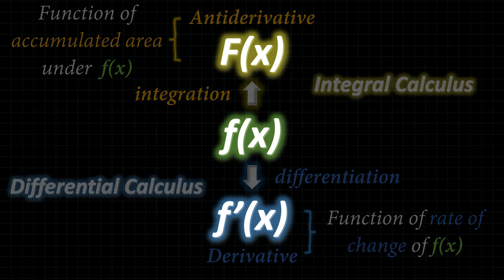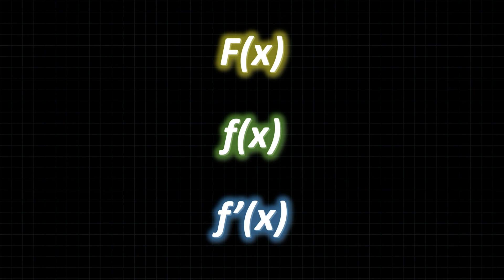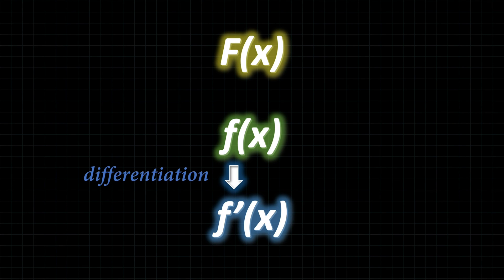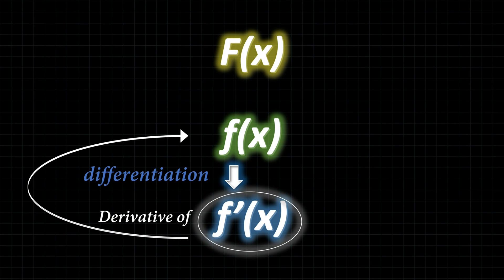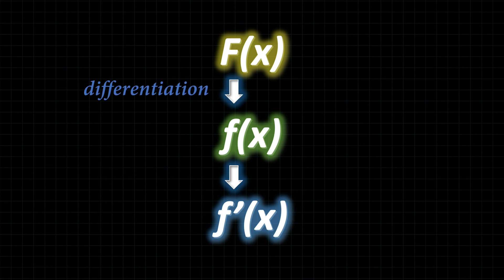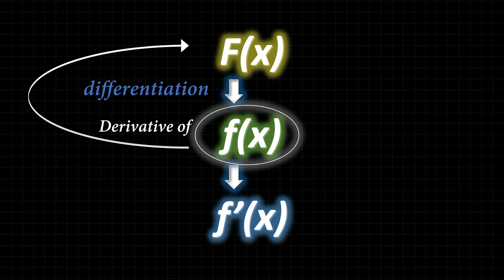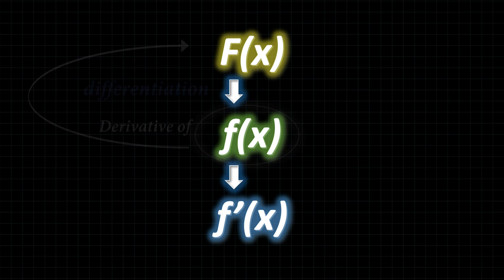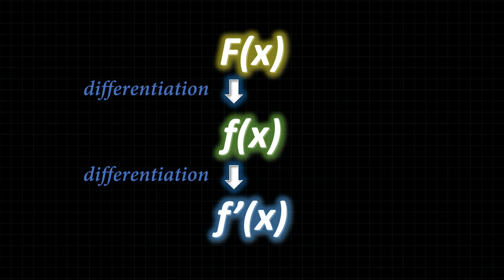But what if I don't start at f(x)? Sure, I know that when I differentiate f(x) I end up with f'(x), the derivative of f(x). But what if I differentiate capital F(x), pretending it's my original function? Then f(x) would be the derivative of capital F(x). In other words, anytime we're moving downwards here on screen, we're finding the derivative of the previous function above.